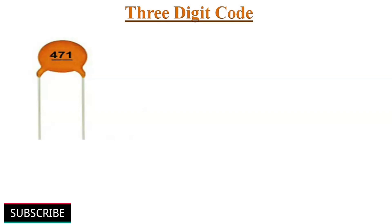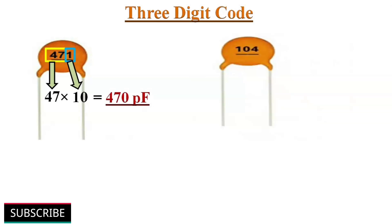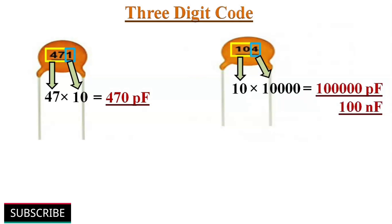A three-digit code consists of two value digits and a multiplier, much like resistor color codes. For example, 471 indicates 470 picofarads. Likewise, 104 indicates 10 multiplied by 10 to the power of 4, giving 100 nanofarads of capacitance.